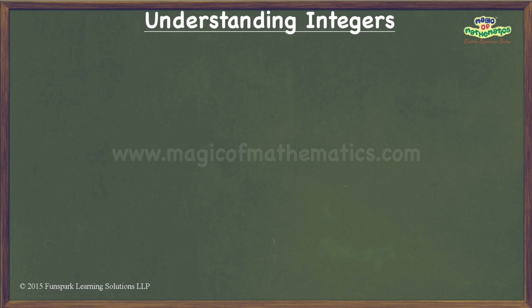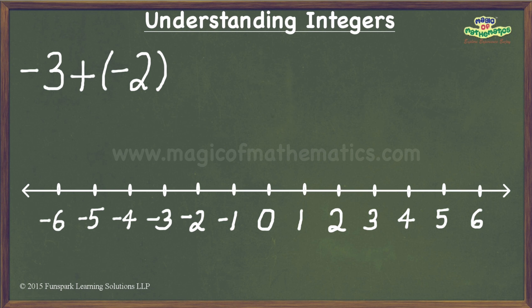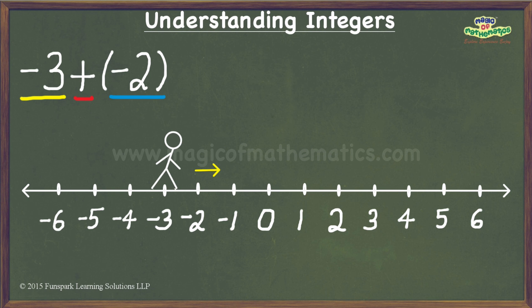Now that we have looked at the rules, let us apply them in the context of a few examples. The first example is negative 3 plus negative 2. I draw a number line with markings representing the positive and negative integers. In this example, the first operand is negative 3, so I will start my journey from negative 3. Since we have the addition operator, I turn to walk towards the right. Next, I look at the second operand, which is a negative integer of magnitude 2. This means I need to walk two steps backwards, thereby ending up at negative 5, which is what the expression evaluates to.